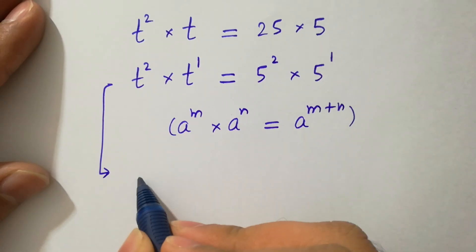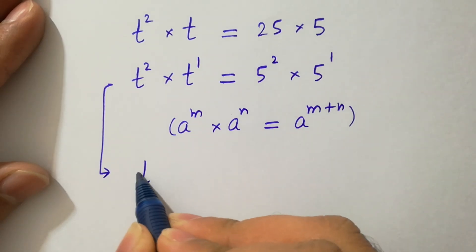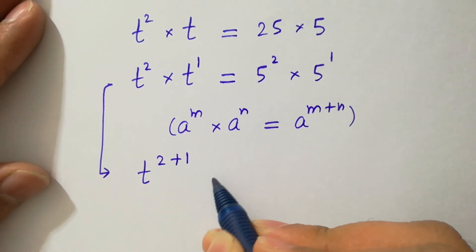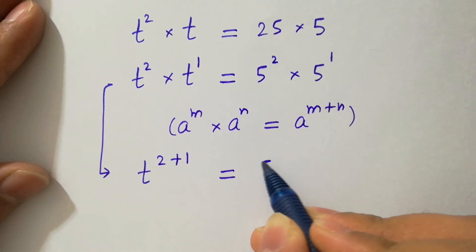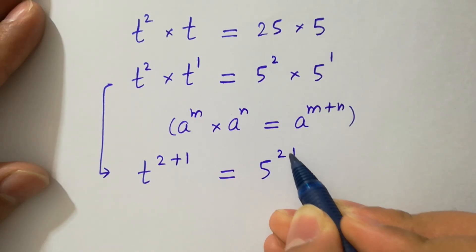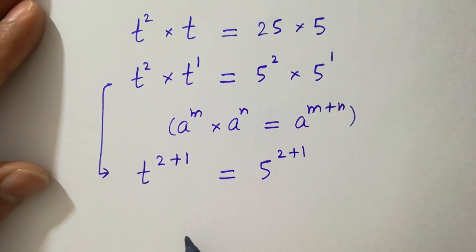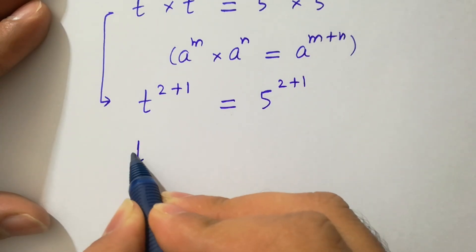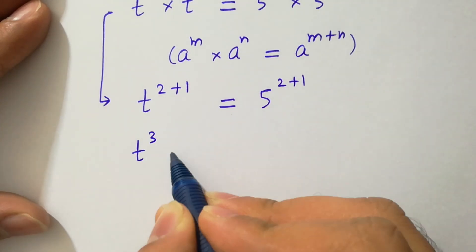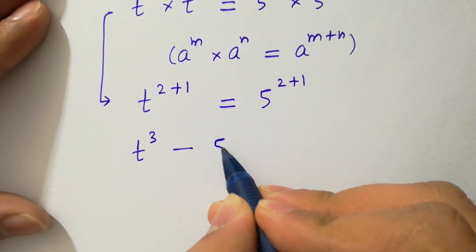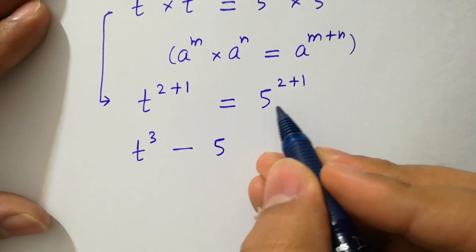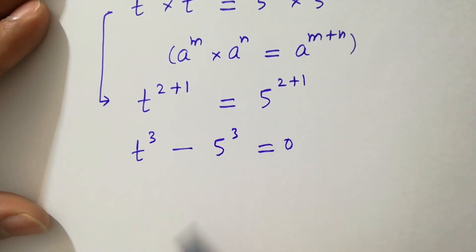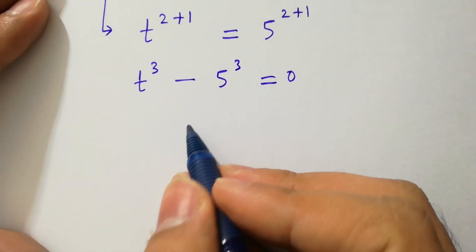Then it will be t to the power 2 plus 1 equal to 5 to the power 2 plus 1, which can be written as t to the power 3 minus 5 to the power 3 equals 0.